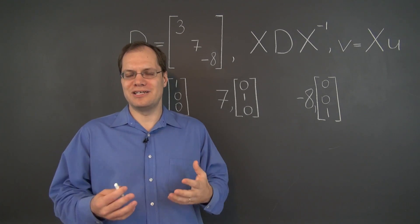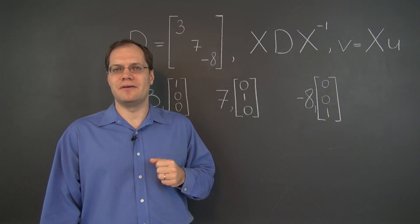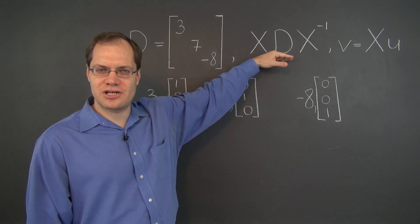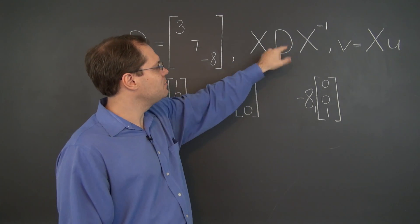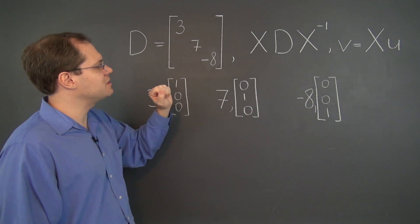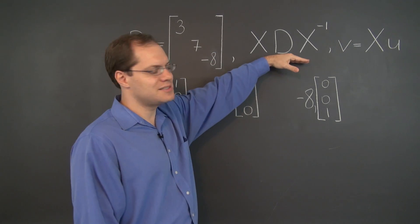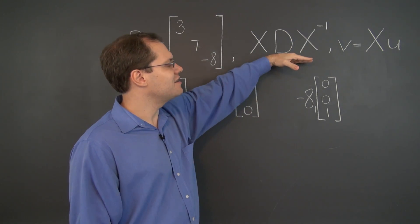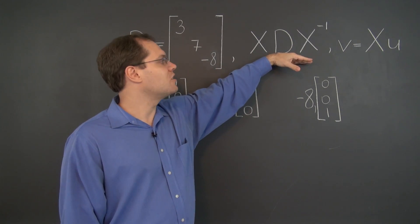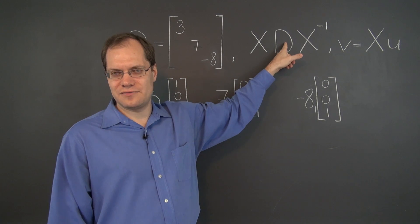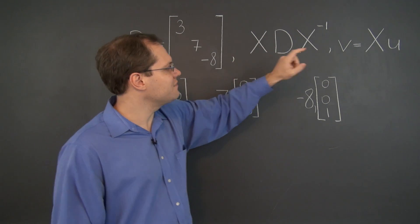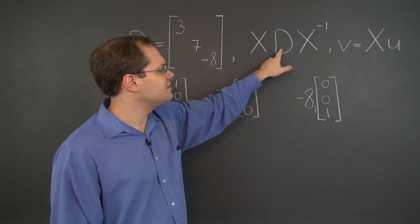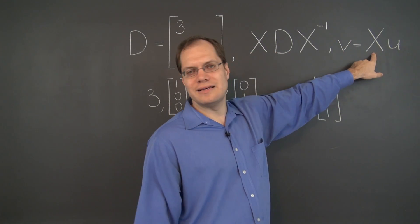We should also remember that for a matrix obtained by a similarity transformation, and here I'm using D to denote the matrix because it's diagonal, of course the statement is true for any matrix, but we will use a diagonal matrix, that the eigenvalues are the same as the eigenvalues of this matrix, and the eigenvectors V are related to the eigenvectors of D, denoted by U, by this matrix.